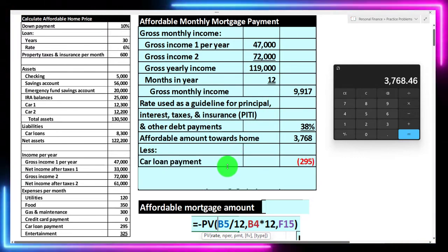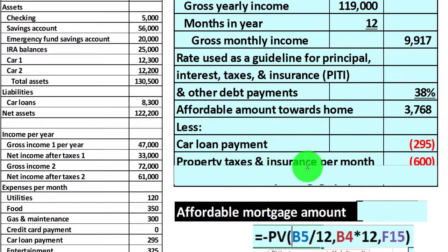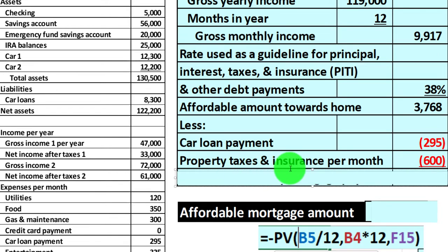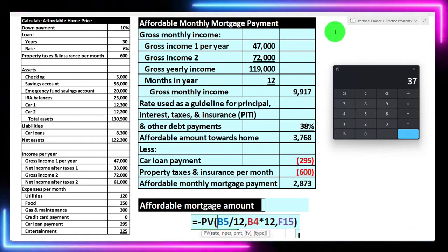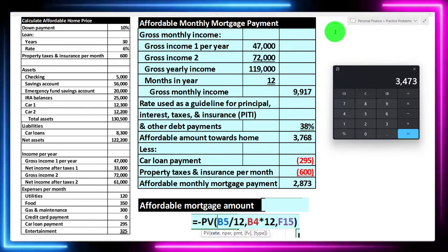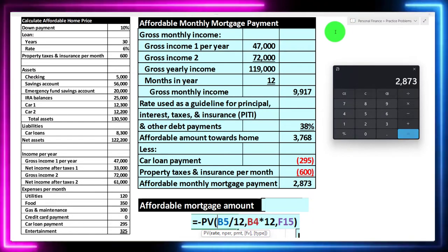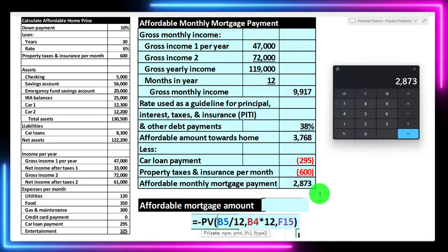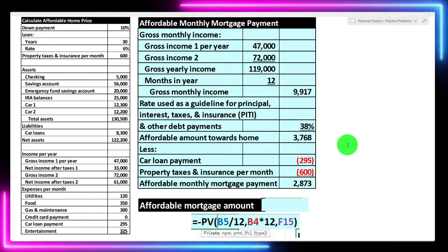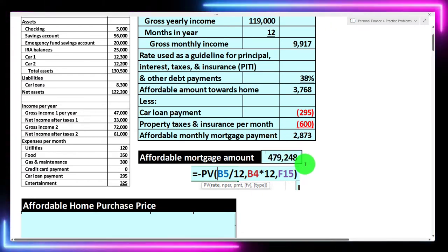This number includes principal, interest, taxes, insurance, and possibly other debts — it's a heuristic estimate based on gross income. So we subtract out the car loan and property taxes and insurance to isolate just the loan financing. Taking $3,768 minus $295 for loans and minus $600 gives us $2,873. That's the monthly amount the bank would be willing to finance just for the loan.